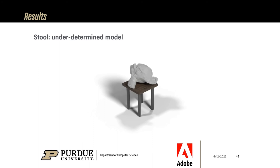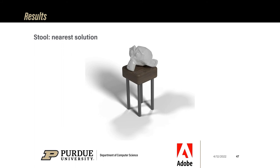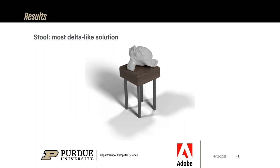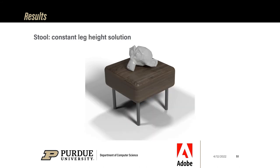Next is a typical example of a model undergoing an underdetermined edit — a stool with an object on it. If we move the object up, we can either make the seat thicker or lengthen the legs. The system presents multiple solutions: the one that changes parameters the least, the one that changes them the most, the one that adds a constant value to all parameters, and the one that keeps the proportions best. Another solution keeps the legs at the same height.